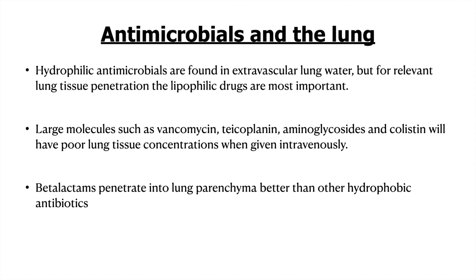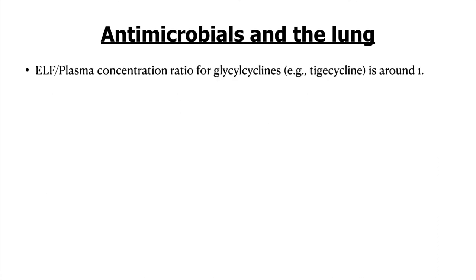Beta-lactams have much better lung parenchyma penetration compared to other hydrophilic agents. Tigecycline has an extravascular lung fluid to plasma concentration ratio of approximately 1, meaning it does not reach very high concentrations in the lungs, with even less penetration into the lung parenchyma. Therefore, tigecycline is not an ideal agent for VAP, though it can be tried when no other options are available.